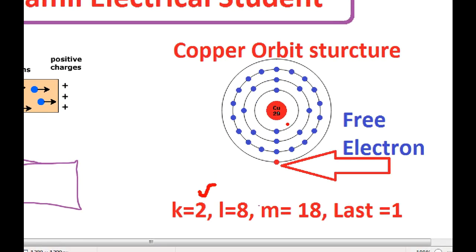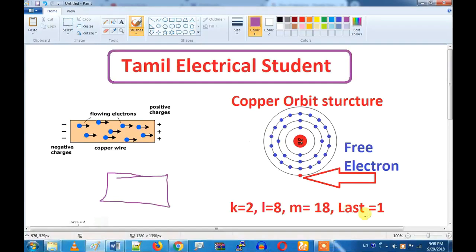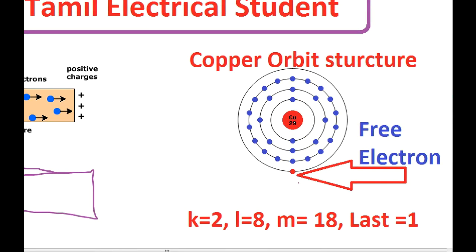In the first band, there are 2 electrons. In the second band, there are 8 electrons — 2, 3, 4, 5, 6, 7, 8. In the M band, there are 18 electrons. If you look at the last band, you can see that.